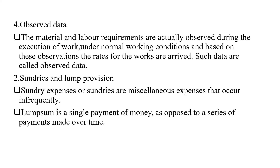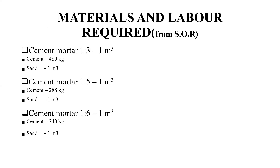Sundries and lump sum provisions: sundries are miscellaneous expenses that occur infrequently. A lump sum is a single payment of money as opposed to a series of payments made over time. These are the materials and labor requirement forms as well, included in the schedule of rates.